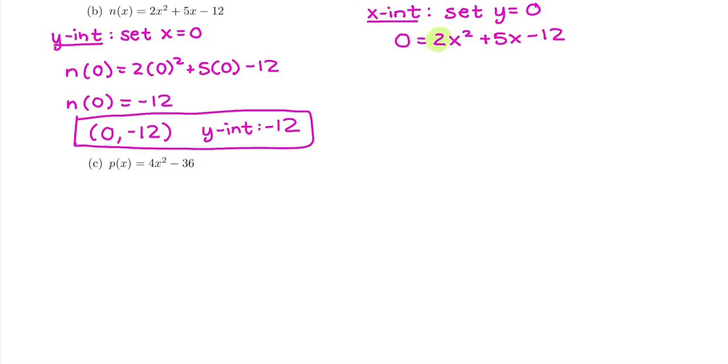Well, to take out a greatest common factor of 2, it would have to go into everything nicely. 2 goes into 2. It also goes into negative 12, but it doesn't go into 5. So I can't just pull out a greatest common factor. There's no big number that comes out of everything. And there's also no least power of the variable. There's no least power of x I can pull out. So there's not a greatest common factor, which tells me I'm going to use some factoring by grouping here.